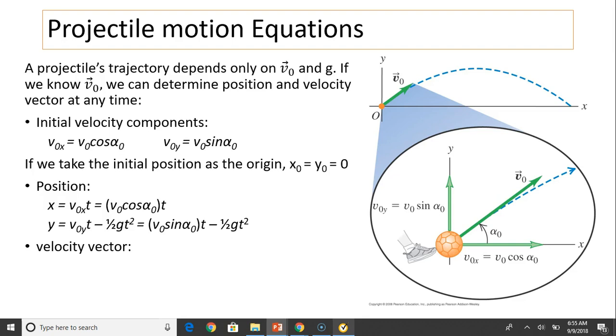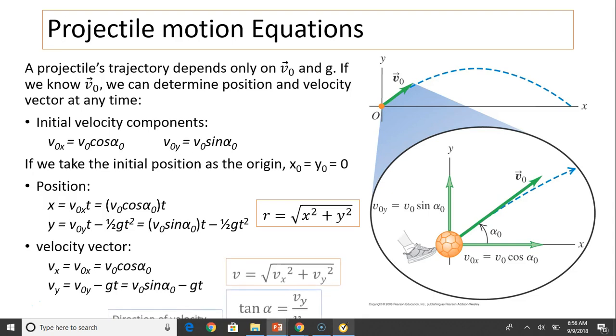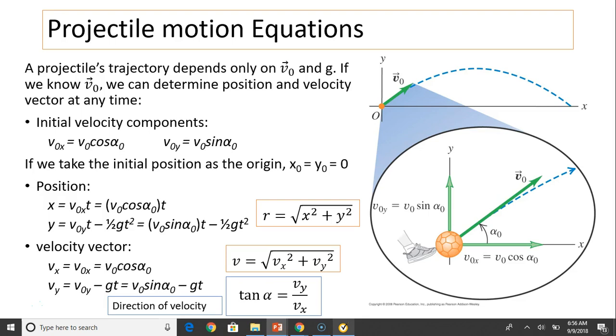For the velocity vector, we can use Pythagorean theorem to find distance. The velocity vector is vx equals v0x because vx is constant, and vy equals v0y minus gt. We can substitute v0x and v0y accordingly. To find the magnitude of velocity, we use Pythagorean theorem, and use tangent α to find its direction of motion.